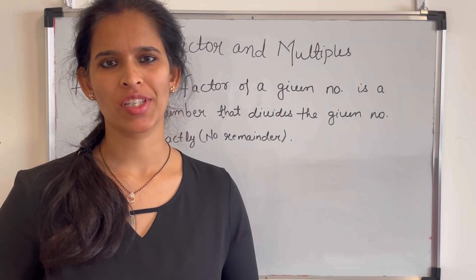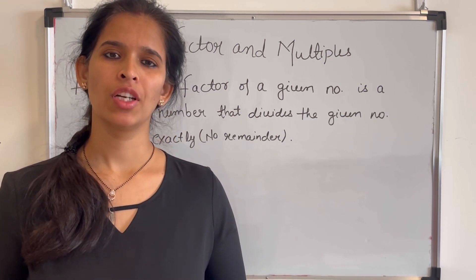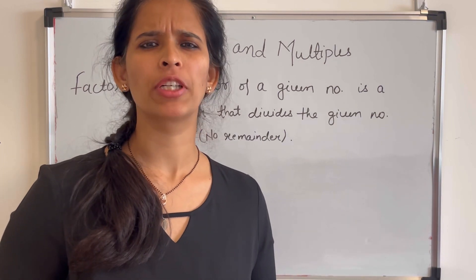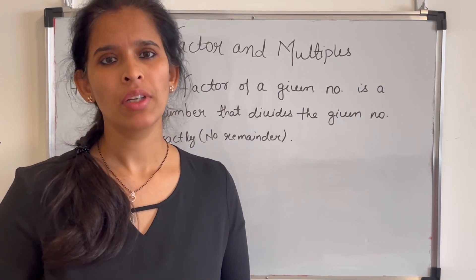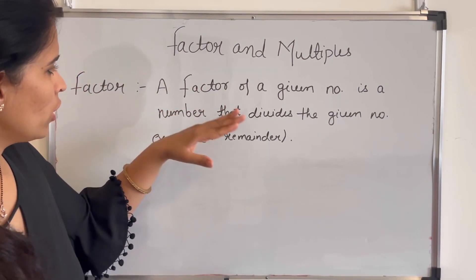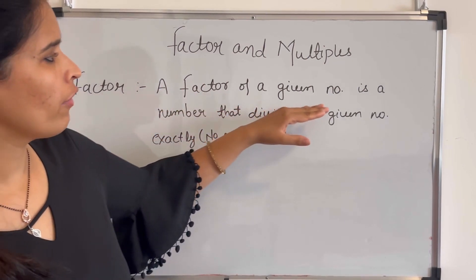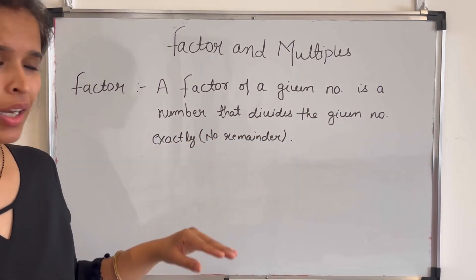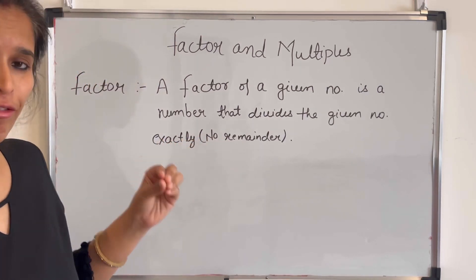Hello everyone, welcome to Just Maths. Today we will learn about factors and multiples. So let's start with factors. What are factors? What are the properties of factors? How to find out the factor of a given number? The definition of a factor is: a factor of a given number is a number that divides the given number exactly with no remainder.